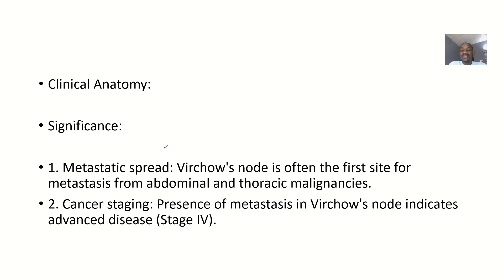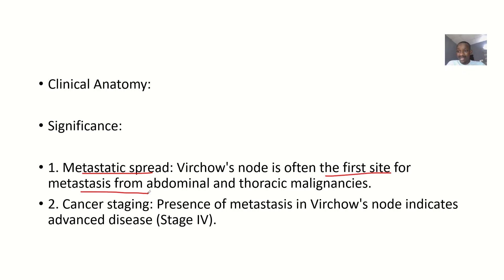Why do we study this? That is the clinical importance. The Virchow's node, being the largest lymph node in the neck, is often the first site for metastasis of any cancer from the abdomen or the thorax. So if somebody has a cancer in the stomach, abdomen, or thorax, the first place to check is to palpate the Virchow's node to see if there is a possible spread there.